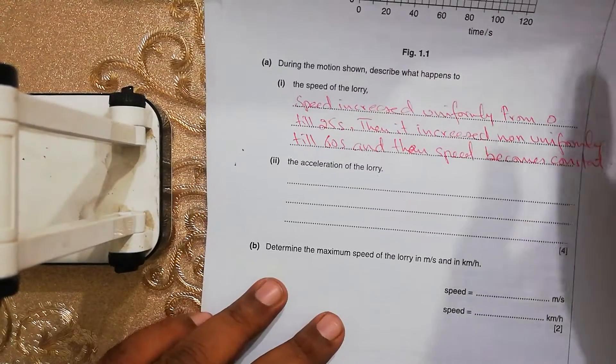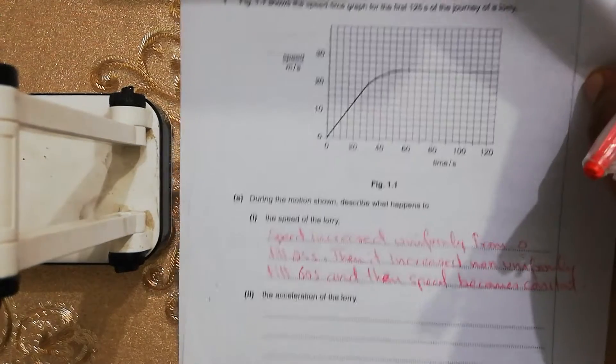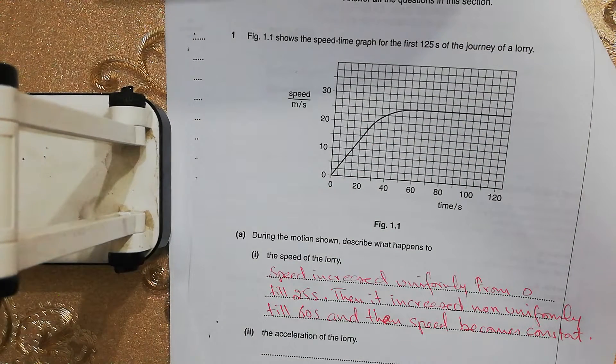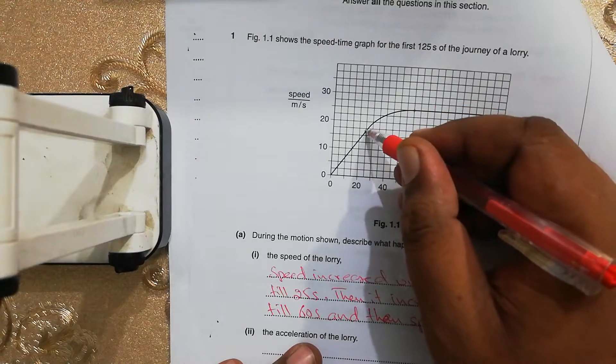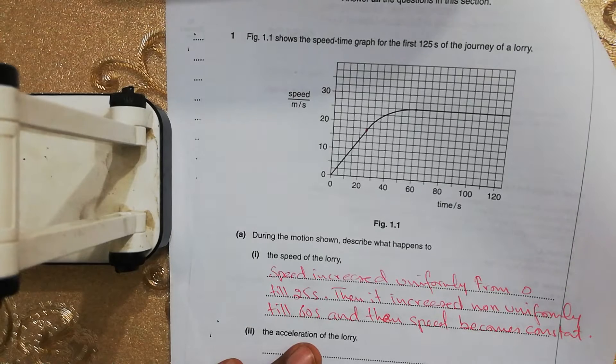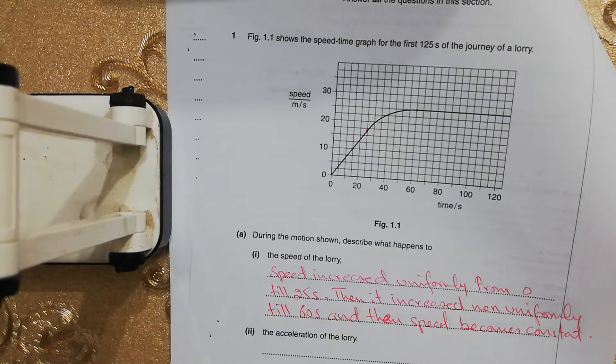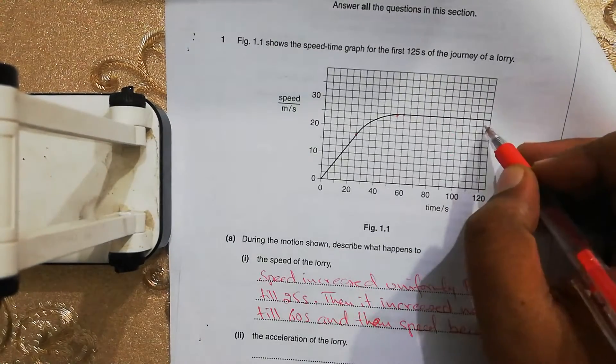Then the next question is the acceleration of the lorry. As you know, this is a speed time graph is given to us. The slope of the speed time graph represents the acceleration. So the question is what is happening with the acceleration. From 0 to 25 seconds the slope is constant. Then the slope decreases. When the slope is constant, the acceleration is constant. Then the slope starts decreasing and then the slope becomes flat, so it becomes 0.